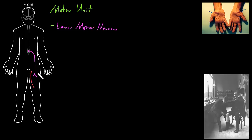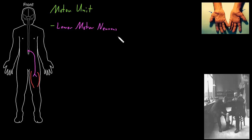Let me just draw a red outline here for some of the skeletal muscle in the thigh. Skeletal muscle is the main muscle type of our body. It's all over our body and mostly connected to our skeleton to move us around. And the neurons of the nervous system that tell skeletal muscle when to contract are the lower motor neurons.